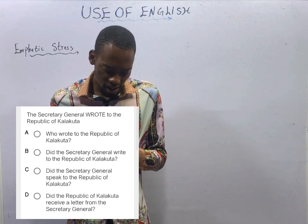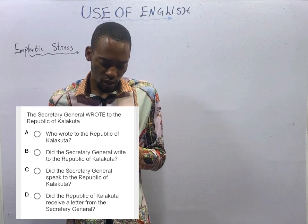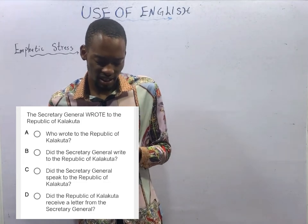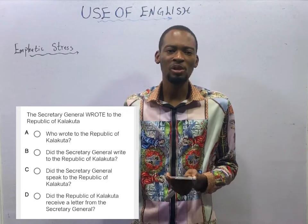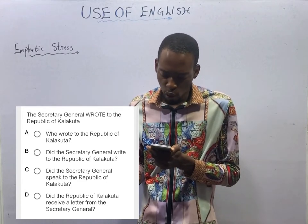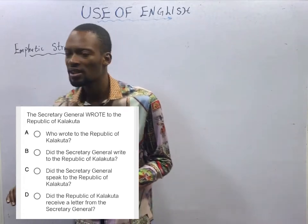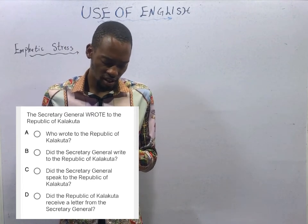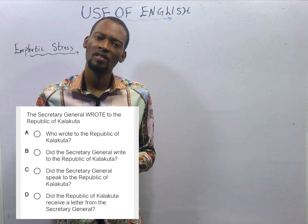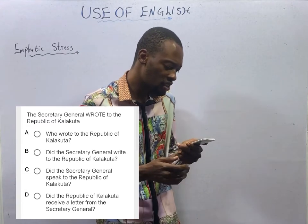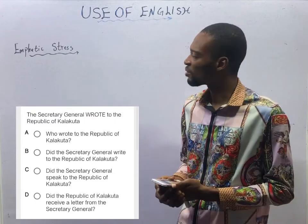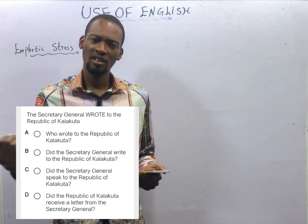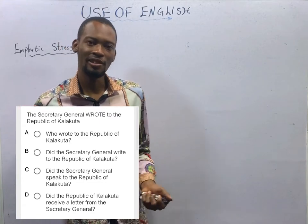Looking at option D: did the Republic of Kalakuta receive a letter from the Secretary General? There is no 'letter' in the sentence — apart from 'wrote,' the sentence should remain intact. Option A says 'who wrote?' — it contains 'wrote,' making it wrong. Option C says: did the Secretary General speak to the Republic of Kalakuta? If I say that, you have the right to say he did not speak — he wrote. 'Wrote' and 'speak' are opposites, and it makes sense. Option C is the correct option.